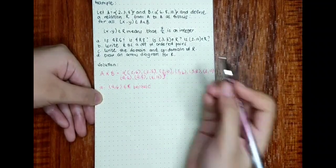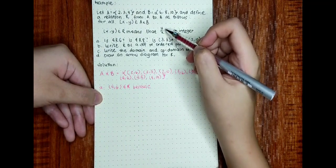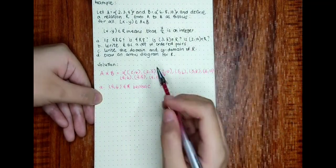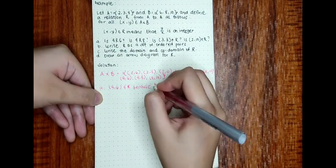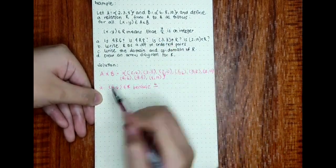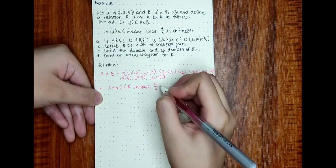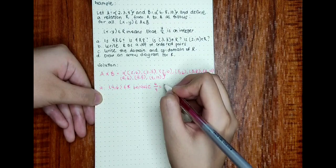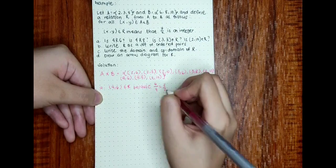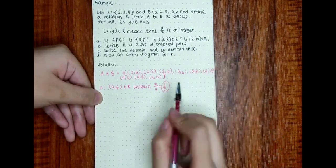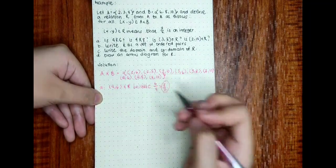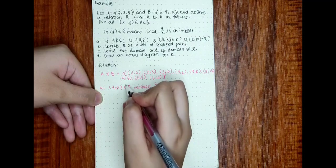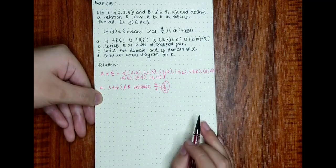Based on the condition, we test if 4 is related to 6. Here y = 6 and x = 4, so y/x = 6/4 = 3/2. Is 3/2 an integer? No. So that means (4, 6) is not an element of R.